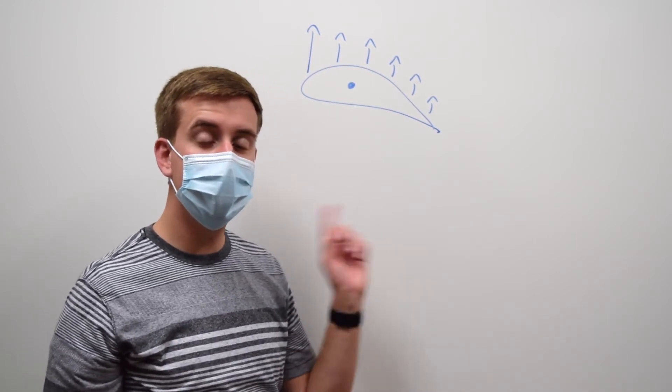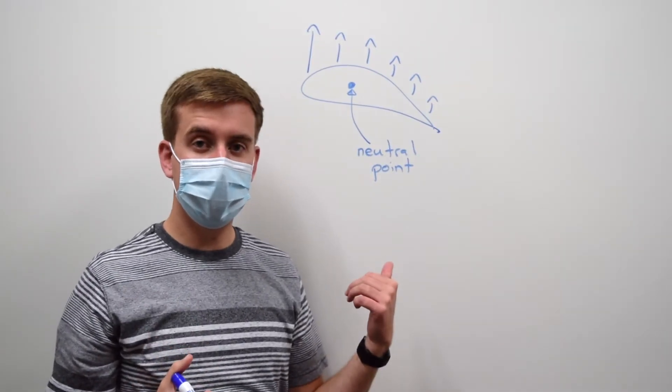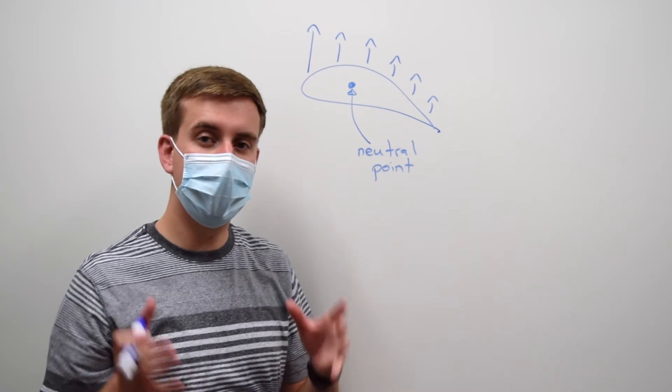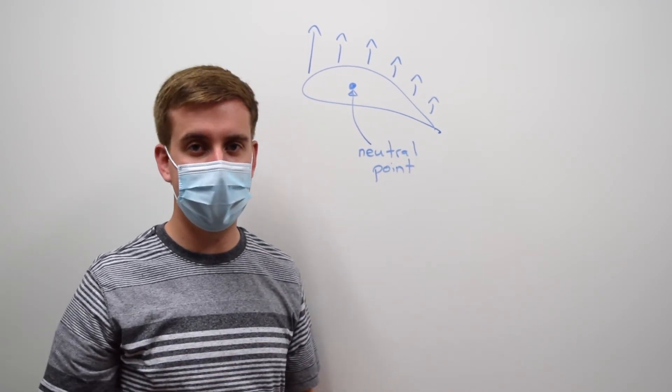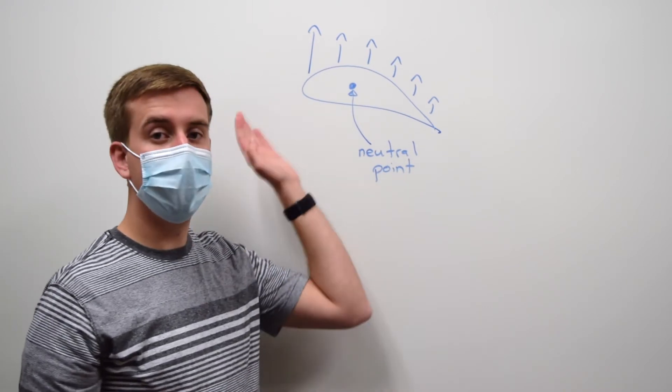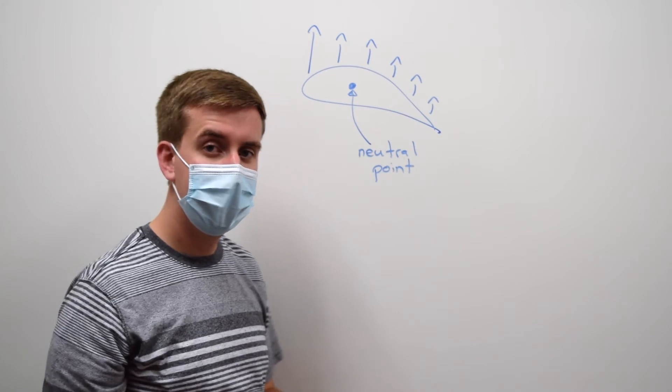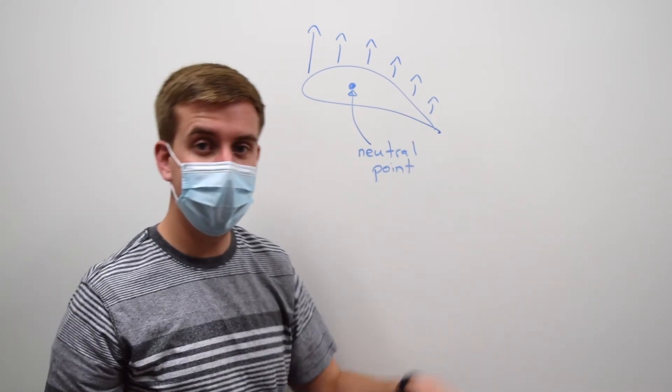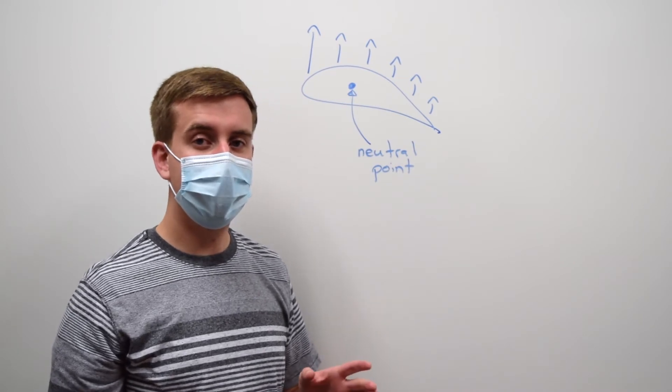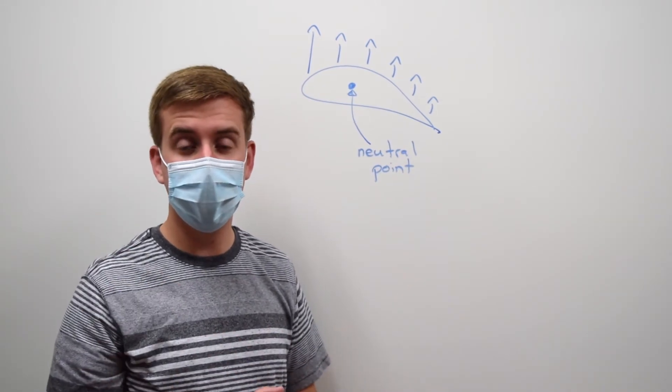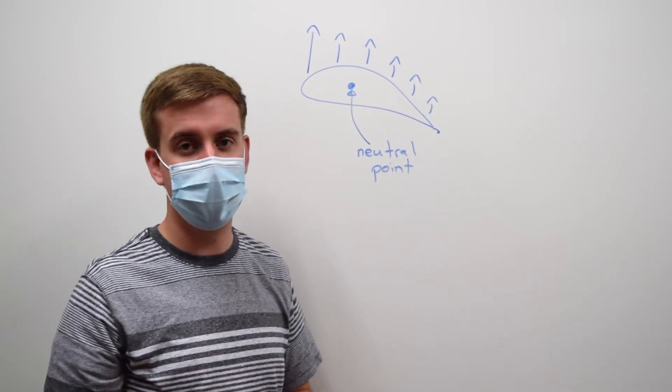And that is still complicated, but it lets us define something really useful. We actually call this point the neutral point. The neutral point is the furthest back that we could put our center of gravity and still have our airplane be stable. If you put your center of gravity in front of your neutral point, you will have a stable airplane. If you put your center of gravity behind the neutral point, your airplane will be unstable. That could be desirable for different applications. But usually we want an airplane to be pretty stable on its own.